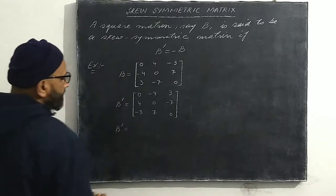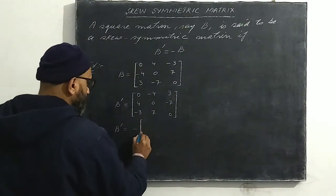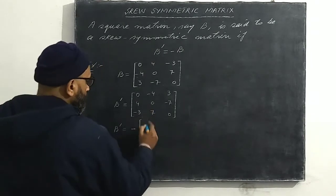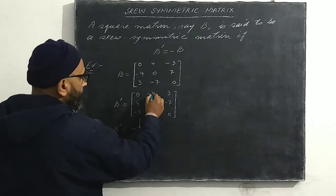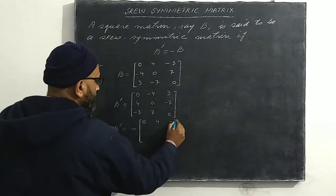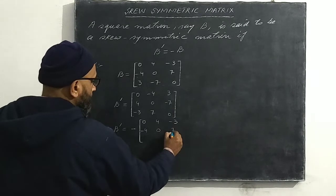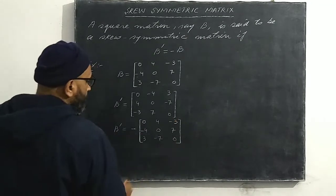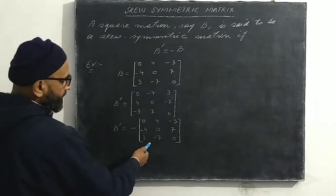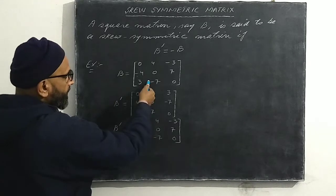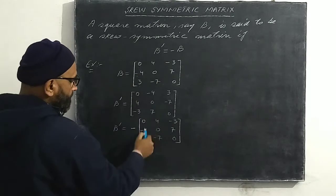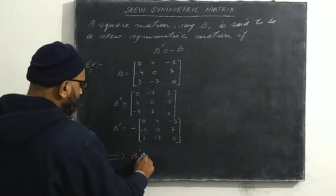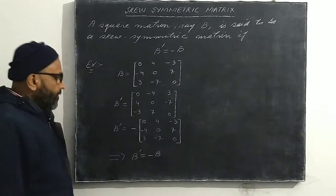Now taking minus one common — that is, writing a negative sign outside the matrix — we interchange the signs of every element. Zero stays zero, and the remaining elements change sign. After factoring out minus one, we get the same elements as matrix B: zero, four, minus three; minus four, zero, seven; three, minus seven, zero. This implies B dash equals minus B, so the criteria of skew symmetric matrix is satisfied, and B is a skew symmetric matrix.